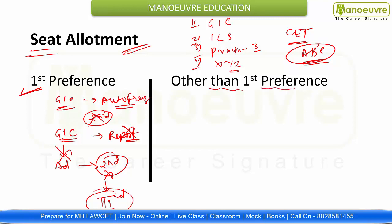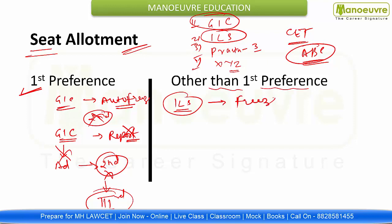Now let's talk about other than first preferences. You gave GLC as first preference but you got ILS — that means you got other than first preference. Now for ILS, if you freeze it — thinking GLC wasn't available but ILS is, so let me take it — you freeze it. Then you cannot participate in the second round because you have frozen. That means you are taking admission to ILS: report to ILS, pay the seat acceptance fees, physically report for verification of documents, and take admission.